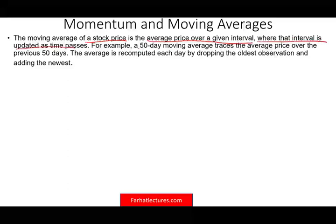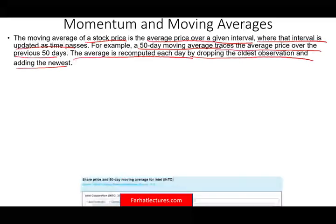For example, if we're looking at a 50-day moving average, we first compute the 50-day averages for the stock over a period of 50 days. Then the average is recomputed each day by dropping the oldest observation and adding the newest one. So once we get to day 51, day one is dropped from the computation, and day 51 becomes the new day 50.